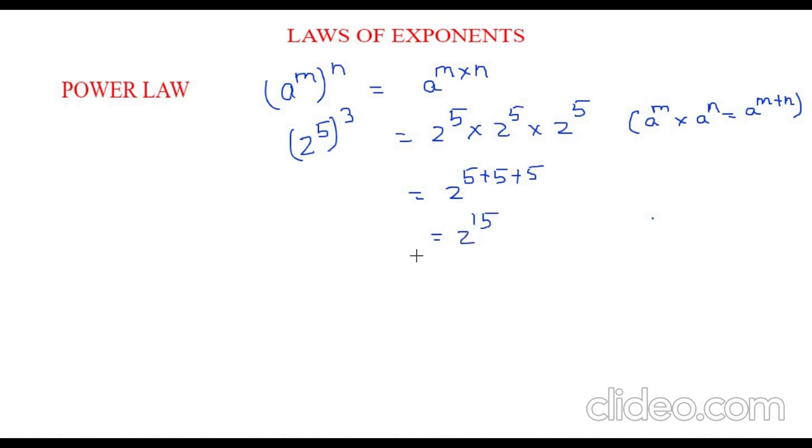So instead of doing so much, we can directly apply the power law, which is 2 to the power of 5, the whole power 3, can directly be written as 2 to the power of 5 times 3, which is 2 to the power of 15. Isn't it easy?